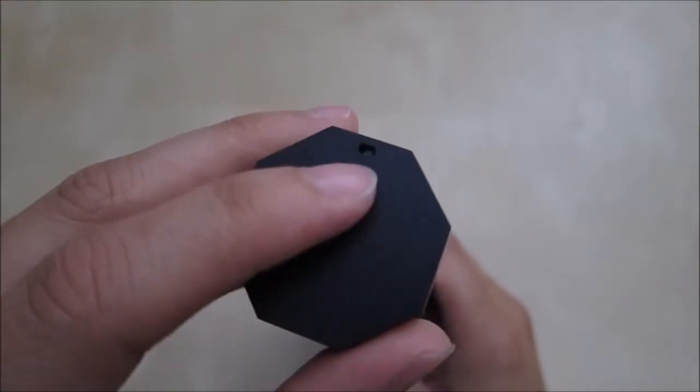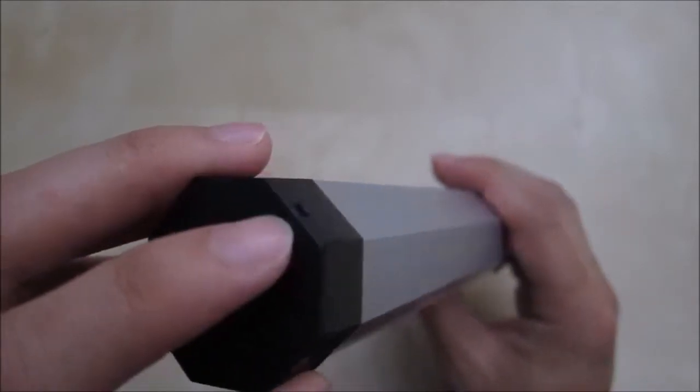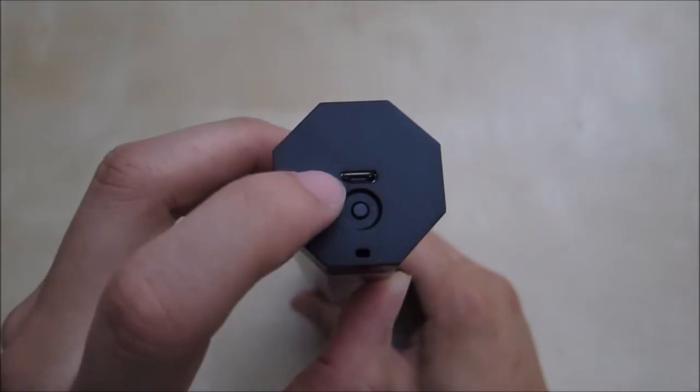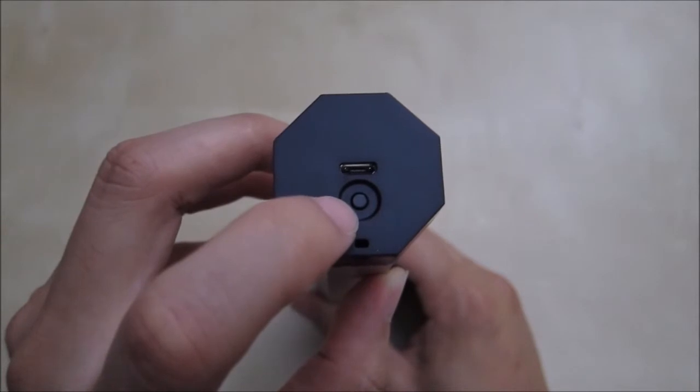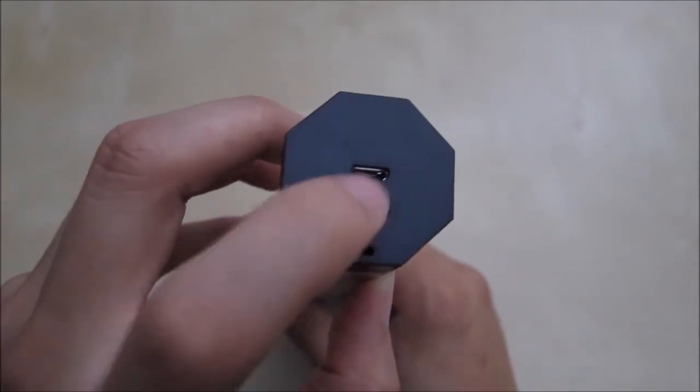First thing to notice: on this end you have a little hole for a lanyard, so you can hook a little wire or nail. On this side you also have the micro USB charging port and the power switch itself. It's a little bit indented as you can see, so it's hard to hit and you don't accidentally turn it on.